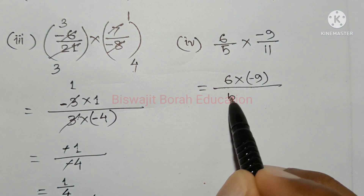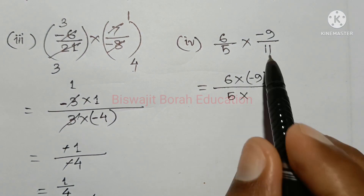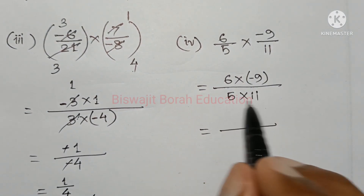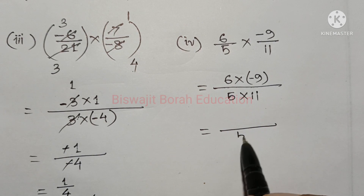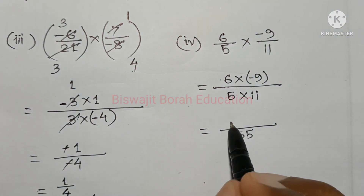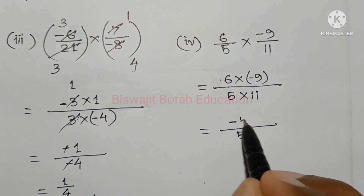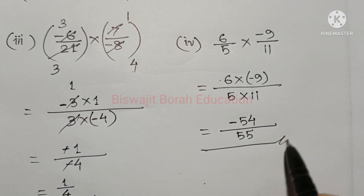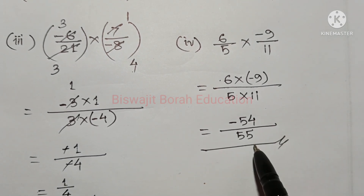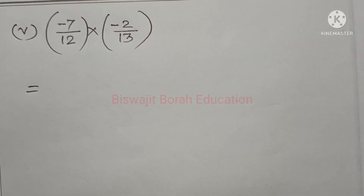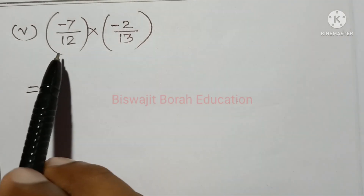So we multiply 5 and 11 on the bottom. We add 5 to 11, giving 15. We add all 5 to 7.